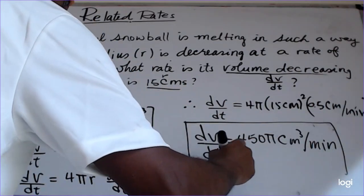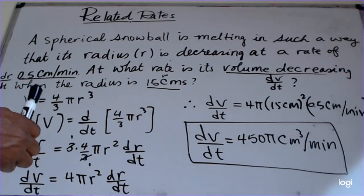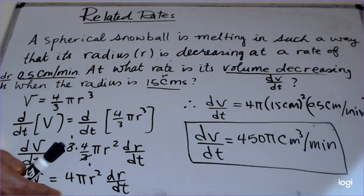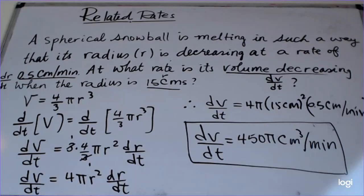You can leave the answer as it is, but if the question says round to the nearest something, you have to punch 450 times π into your calculator and then round it. Notice that since the question says the volume is decreasing, your answer should be left as a positive value — that's very important. I hope this is helpful, and if you have any question or comment, put it in the comment section.